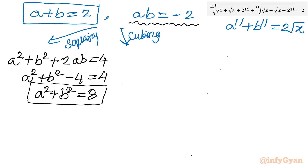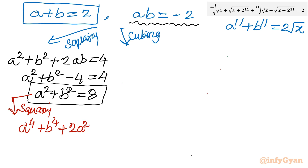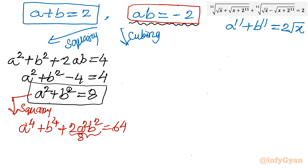So a² + b² = 8. That is an important result. Now squaring again to get power 4: a⁴ + b⁴ + 2a²b² = 64. Since ab = −2, a²b² = 4, so 2×4 = 8. Taking 8 to the right: a⁴ + b⁴ = 56.